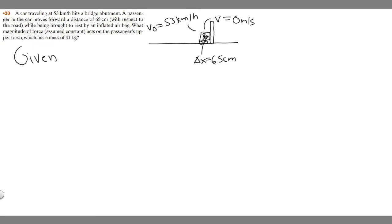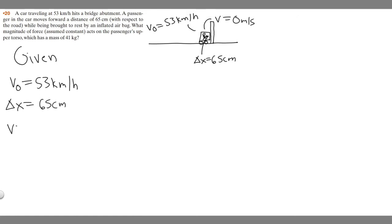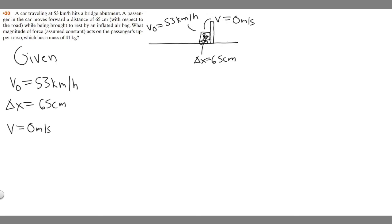So given — what are we given? We know that the initial velocity of the car is going to be 53 kilometers per hour because it's going to be traveling like that. So v sub 0, which just means the initial velocity, is 53 kilometers per hour. We also know the change in x is going to be 65 centimeters, because that's how far the person moves during this time. And then we know the final velocity v is going to be zero meters per second — that's it, it's going to rest. And then we're also told the person in the car has a mass of 41 kg, so mass m equals 41 kilograms.